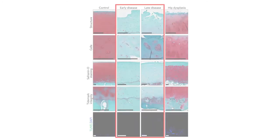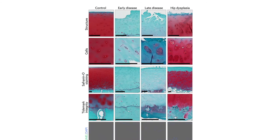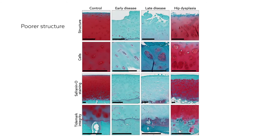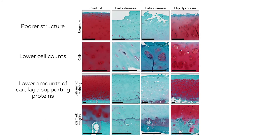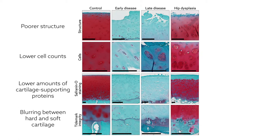Early or late disease cartilage showed worse degenerative changes than cartilage from hips with dysplasia. These included poorer structure, lower cell counts, lower amounts of cartilage-supporting proteins, and a blurring of the normally distinct boundary between hard and soft cartilage. The variation suggested that impingement elicits an inflammatory response in articular cartilage.